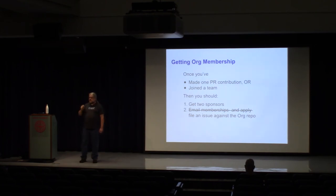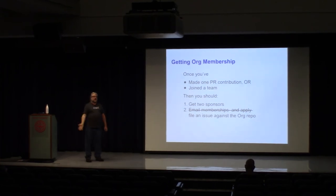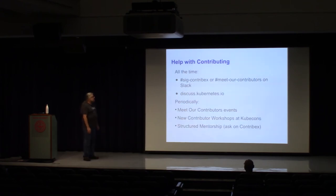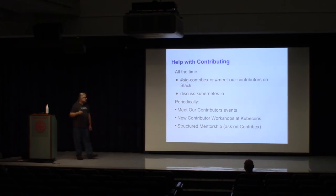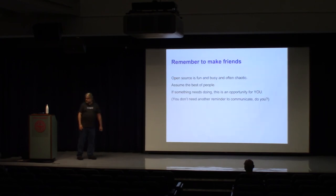The process for requesting org membership recently changed from email-based to filing an issue against a repo. We're still working on some details, so if you do this next week it could be a little janky — just go to the org repo, file an issue, and say 'I should be an org member because X.' Preferably find someone in the project who will endorse that. For help with contributing, use sig-contribex, Meet Our Contributors, Slack, discuss.kubernetes.io, and general events. You can also join a structured mentorship program.